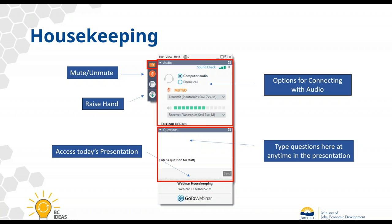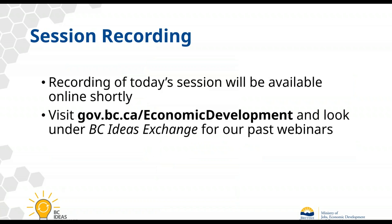If you are calling in and having any challenges with audio, it may be a network issue. Sometimes it is easier to connect with your phone by clicking on the phone call option — a pin will pop up and you'll be able to connect. If you'd like a copy of today's presentation and slides, you should see that in your control panel. You can download it today or from our website when we post the recording later next week at gov.bc.ca/economic development under the BC Ideas Exchange section.